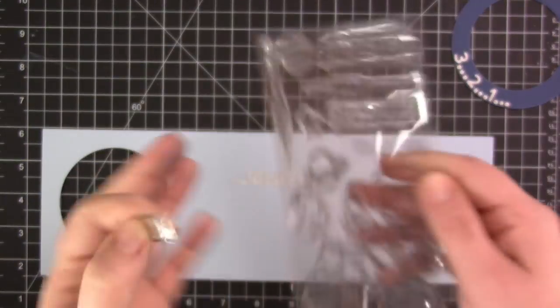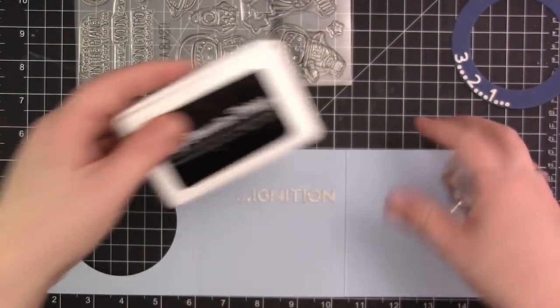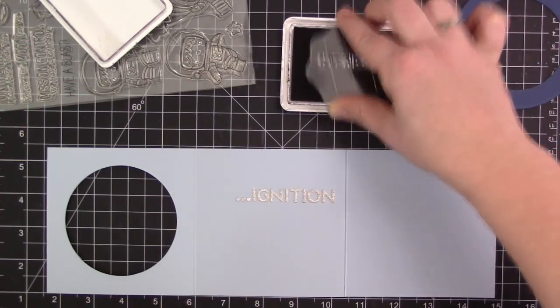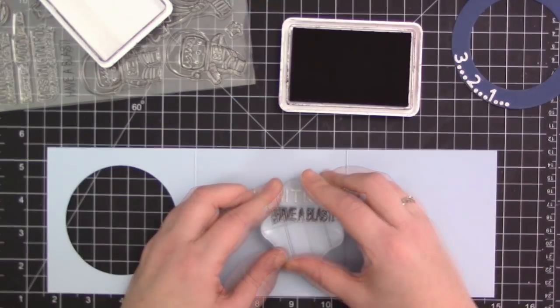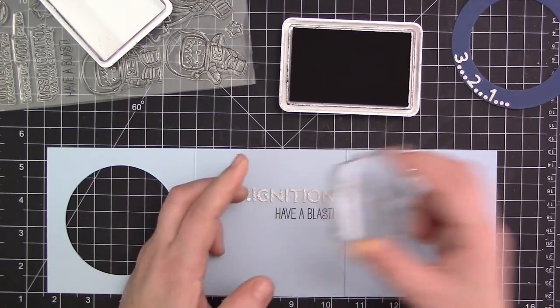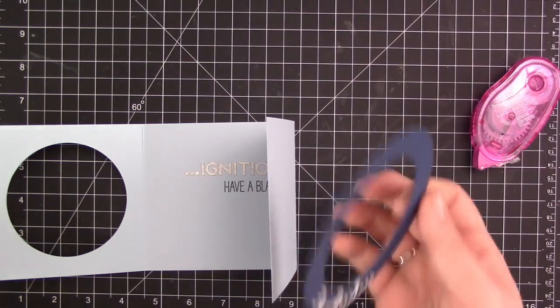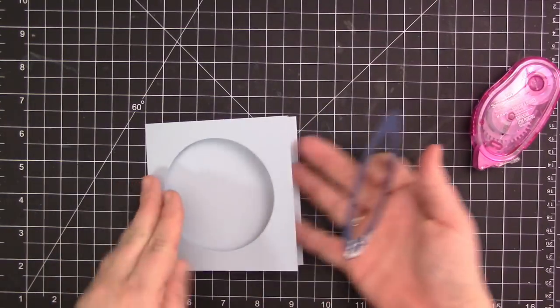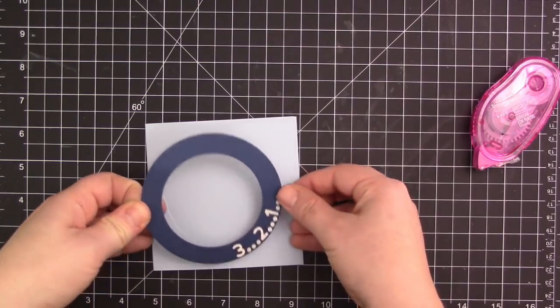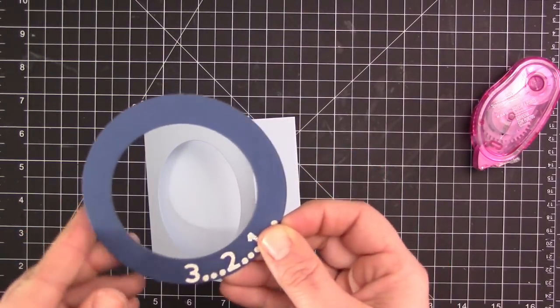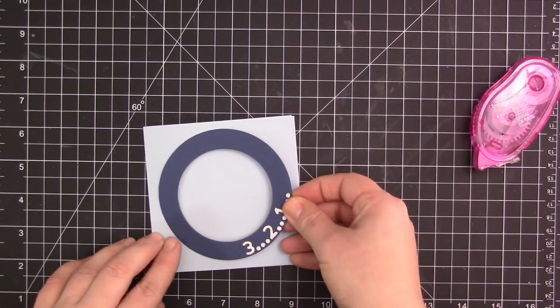So you can see there now it's on there, it's perfectly straight, and I have this really fun sparkly sentiment. And then we're going to finish it off with the have a blast sentiment from the Space Explorer stamp set. So I'm just using some Black Licorice dye ink and I'm stamping that directly underneath, and now we have our finished sentiment on the inside. So the card says three two one, and then when you open the card it says ignition have a blast. So just a really fun sentiment. I love how Francine put this one together.